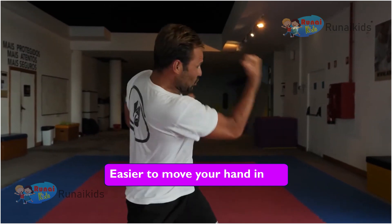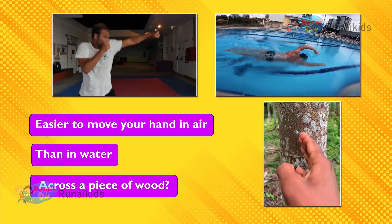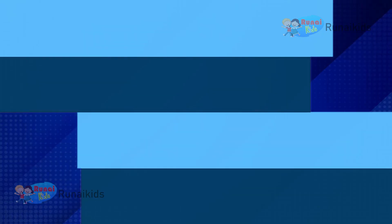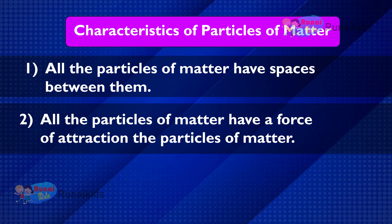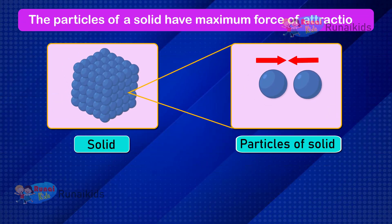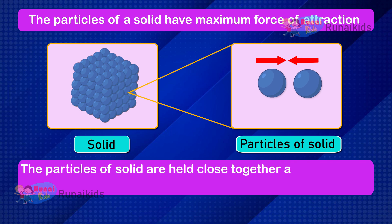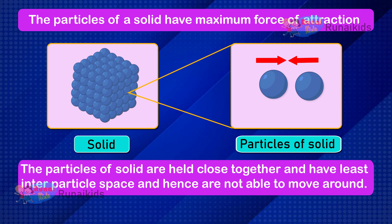Why is it easier to move your hand in air than in water, or across a piece of wood? Inter-particle space is one reason, but not the only one. Another characteristic is the inter-particle force of attraction. The particles of a solid have the maximum force of attraction, which means the particles are held close together with less inter-particle space and are not able to move around — that is why it is very difficult to move across a solid.